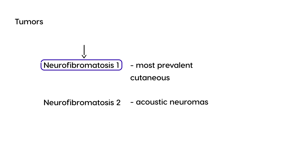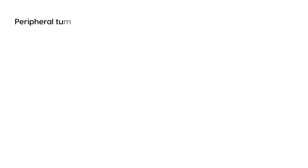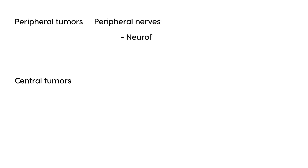On clinical vignettes, neurofibromatosis type 1 typically presents with some sort of skin condition. Tumors are broken into two categories: peripheral tumors and central tumors. Peripheral tumors involve the peripheral nerves — any nerves outside the brain or spinal cord — and are also known as neurofibromas. Central tumors involve the central nervous system, which is the brain and spinal cord.